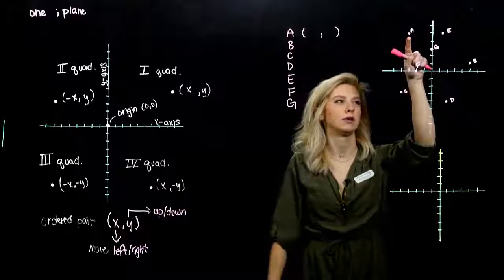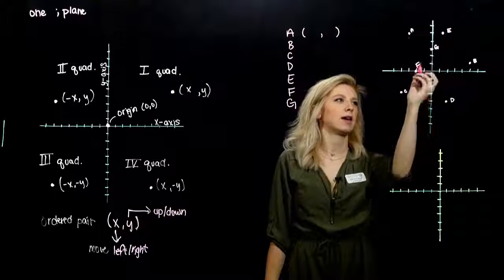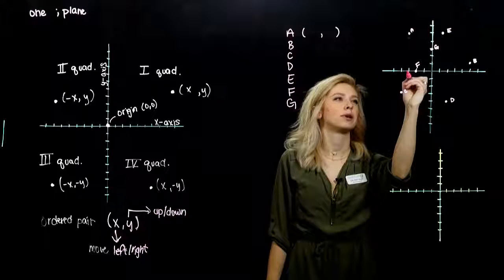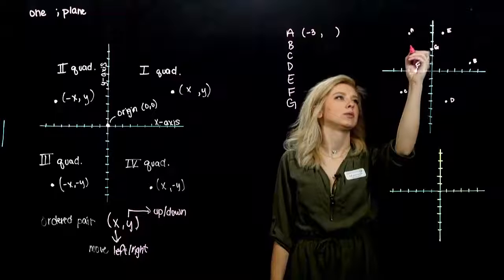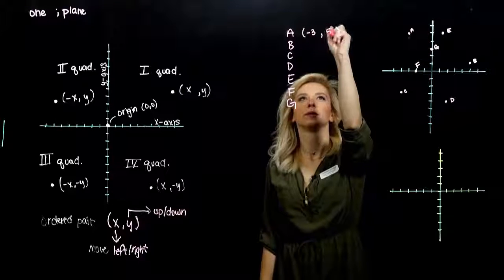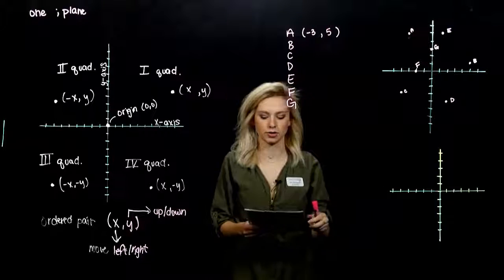A, where is he located? Second quadrant. So, I've got negative x. How many do I go back? One, two, three. I go back three and up how many? One, two, three, four, five. So, negative, positive direction.